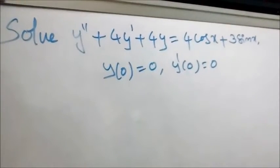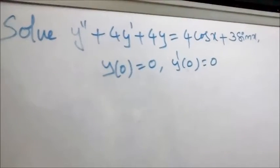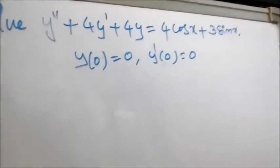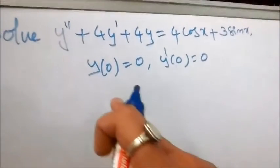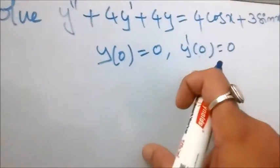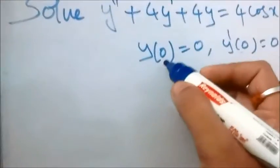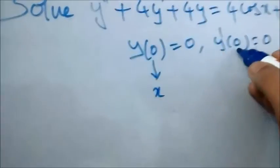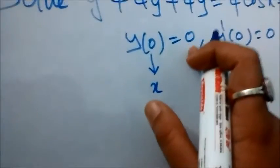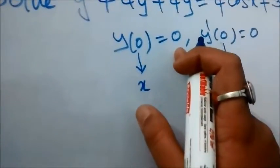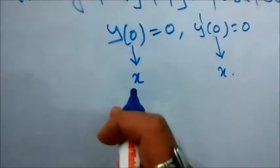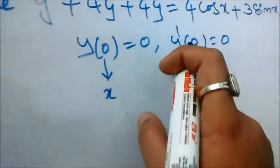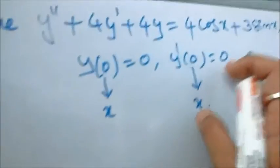Solve y'' + 4y' + 4y = 4cos(x) + 3sin(x) with initial conditions y(0) = 0 and y'(0) = 0. Here x=0 is the x-value and 0 is the y-value. When x equals 0, y equals 0, and when x equals 0, y' equals 0.